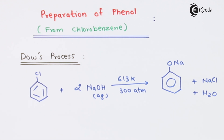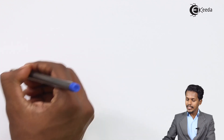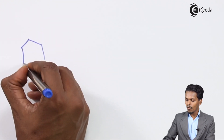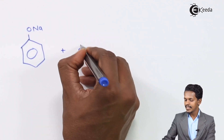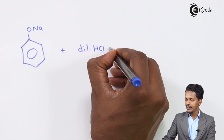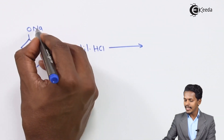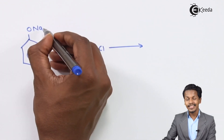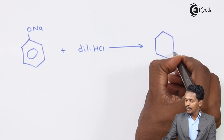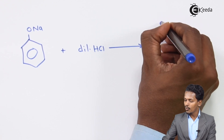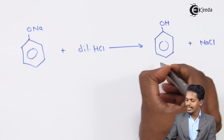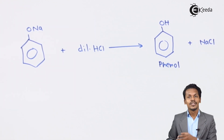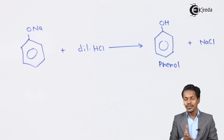The sodium phenoxide obtained in step one of Dow's process is treated with dilute HCl. In this step, the Na is replaced by a hydrogen atom, and we get a benzene ring with an OH group — that is, phenol. This is how we convert chlorobenzene to phenol via Dow's process.